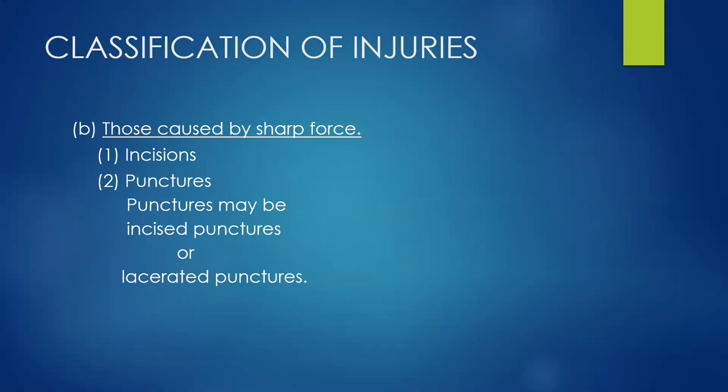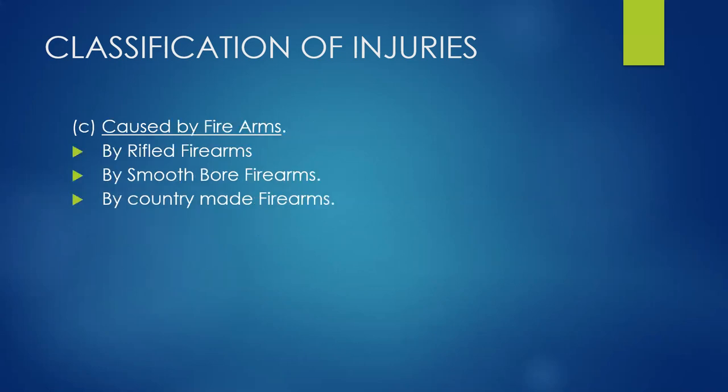The second type of mechanical injury is caused by sharp force; two varieties are incised wound and punctured wound — sometimes puncture wounds may be incised puncture or lacerated punctures. The third variety is caused by firearms: by rifle, smooth bore, or country-made firearms.